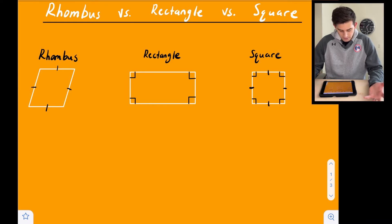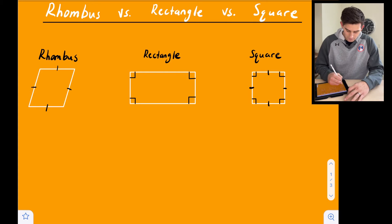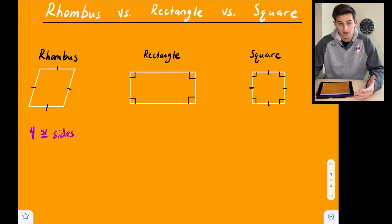So first of all, let's start with a rhombus. We see a rhombus. It looks like a parallelogram. That's because it is a parallelogram, but a rhombus specifically is a parallelogram that has four congruent sides. So that's basically what a rhombus is.